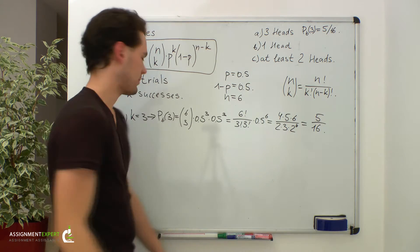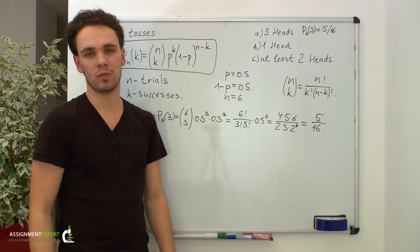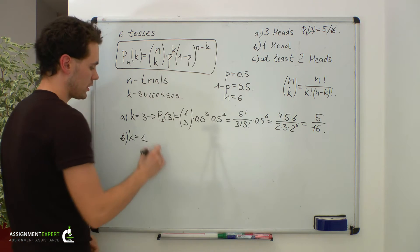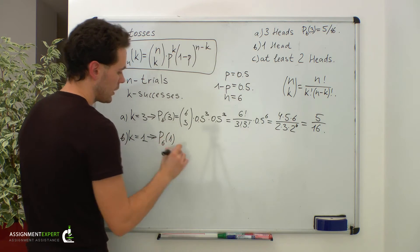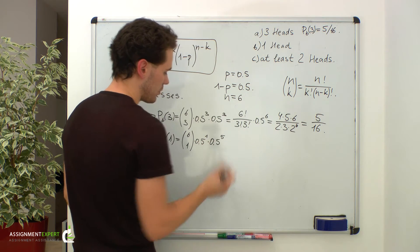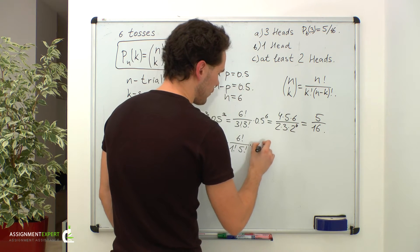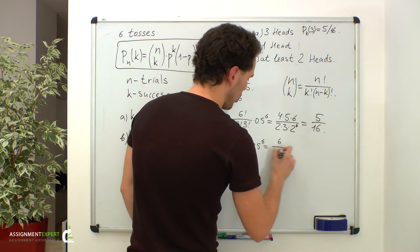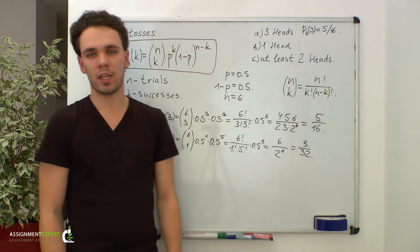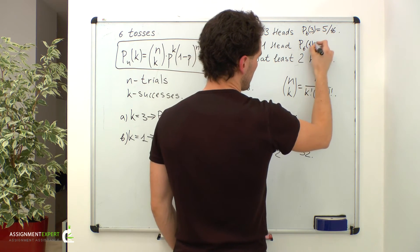Now let's move on to case B. We need to find the probability of getting one head. Success is getting head in a single toss of the coin, so one head means one success and k is equal to 1. Using the formula, the probability equals 6 choose 1 times 0.5 to the first power times 0.5 to the fifth power, which equals 6 factorial over 1 factorial times 5 factorial, times 0.5 to the sixth power. This gives us 6 over 2 to the sixth power, which equals 3 over 32.